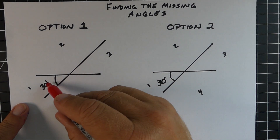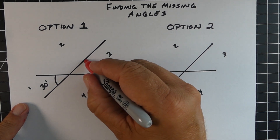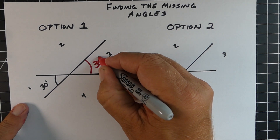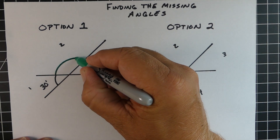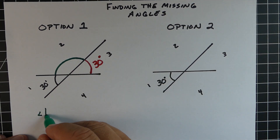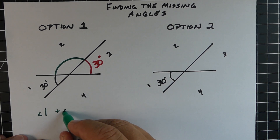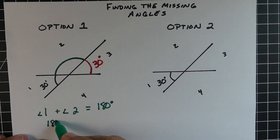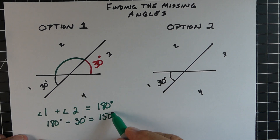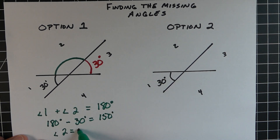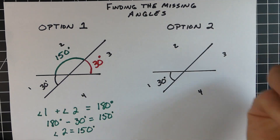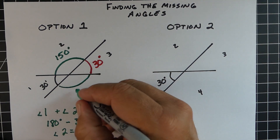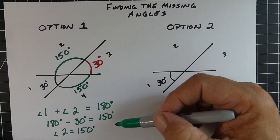The next thing we're looking at is finding the missing angles of intersecting lines. So if we start with this one — this is strategy or option one. If angle one is 30 degrees, angle three is also going to be 30 degrees — vertical angles. We also know that angle one plus two are adjacent, so they're going to equal 180 degrees. So we take 180, subtract the 30 degrees we know, and that gives us 150. So the measurement of angle two is 150 degrees. And if angle two is 150 degrees, angle four is also 150 degrees because they're vertical angles.